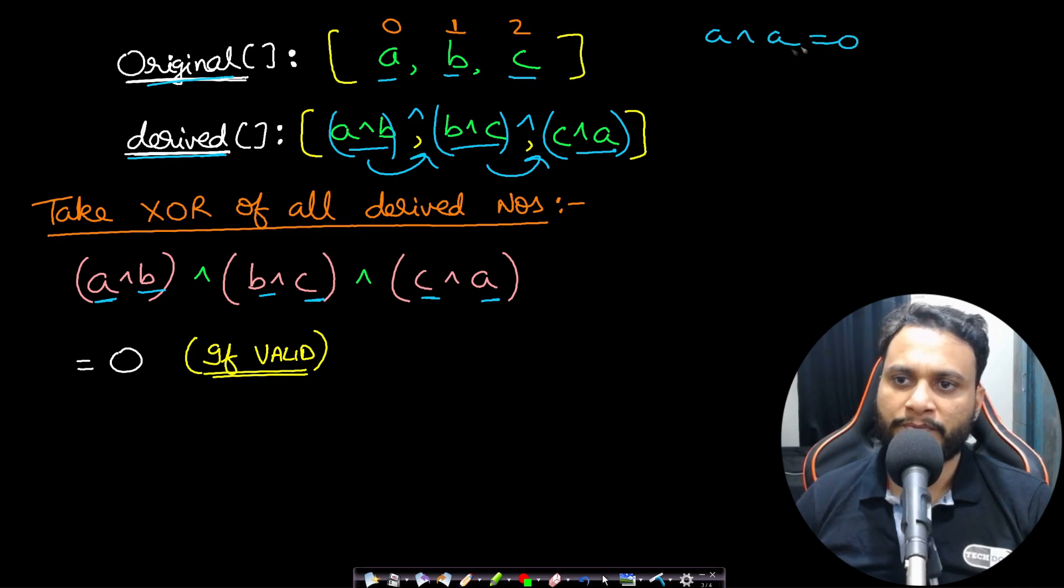b XOR b will be 0. So if an element is present and you take the XOR with the same element, then it will always be 0. So if you take the XOR of all the items in the derived array, then you should always get 0 if it was derived from the original array—from a valid original array.